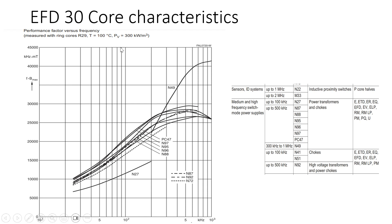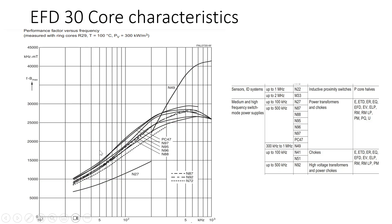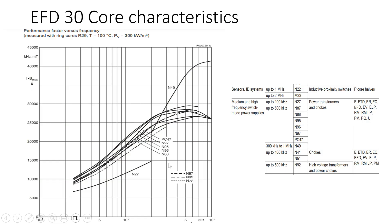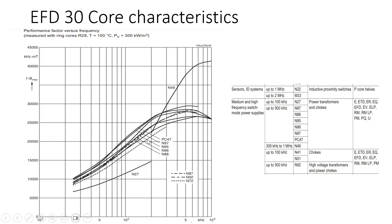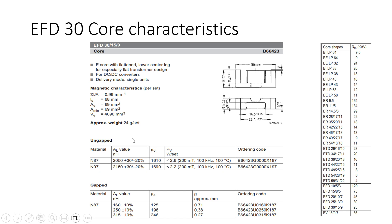Using a very low value for flux density causes very high copper loss. You can use the TDK software to plot the B·f product versus frequency for the N87 core. For a power loss density of 300 kW/m³ at 100 kHz, B_max is 0.185 tesla as shown in the graph. If you choose a lower power loss density of 100 kW/m³, you read a lower B_max from the corresponding curve and use that value in your number-of-turns equations.